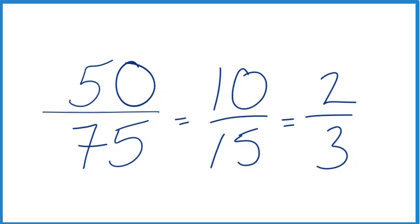You could have also started by dividing each of these by 25. 50 divided by 25 would give you 2. 75 divided by 25 would give you 3. So 25 is the greatest common factor.